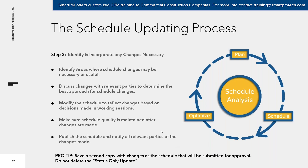At that point, save a second copy with your changes — call that your submission for approval, your schedule update inclusive of changes. Always put the date in the title of the schedule file. Now you've got two schedules: one 'status only' update for that date, and one 'schedule update' that includes your changes.